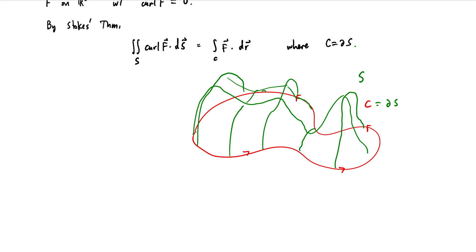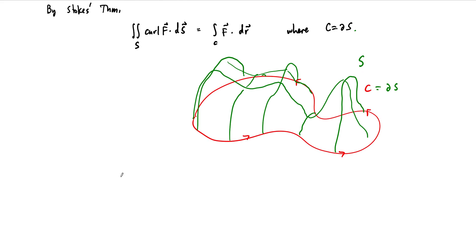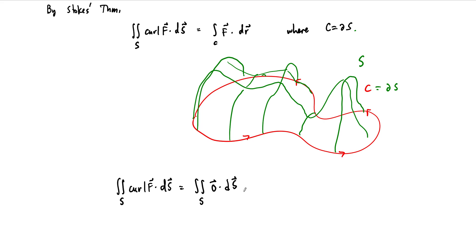In this case, because our curl is the zero vector, the double integral over the surface — the surface integral of curl F dotted with dS — is really equal to the surface integral of the zero vector dotted with dS, which when integrated up is just zero. So this integral equals zero.